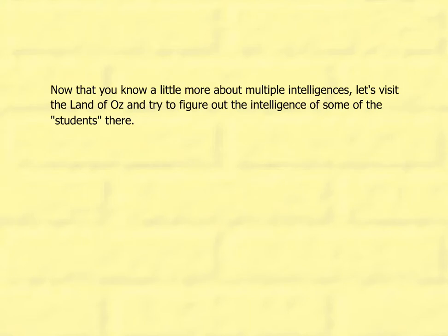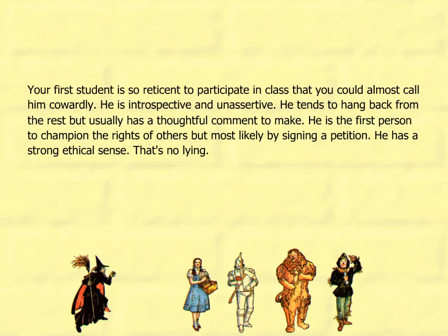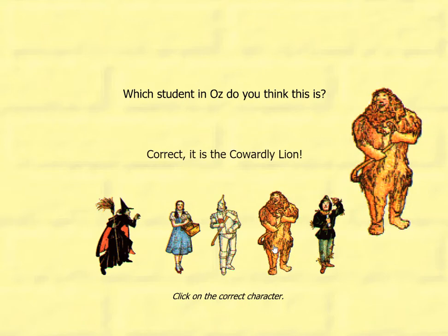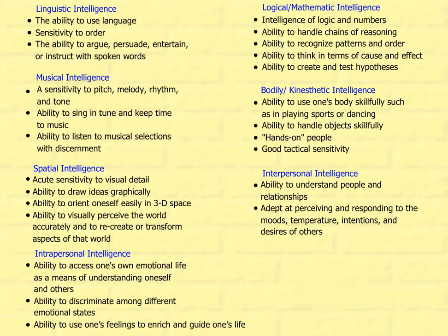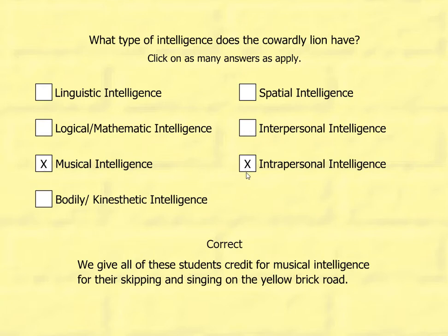Now that you know a little more about multiple intelligences, let's visit the land of Oz to figure out the intelligence of some of the students there. Your first student is so reticent to participate in class that you could almost call him cowardly. He is introspective and unassertive, tends to hang back from the rest but usually has a thoughtful comment to make. He is the first person to champion the rights of others, has a strong ethical sense — and that's no lion. It's the cowardly lion! He has musical intelligence and intrapersonal intelligence. We give all of these students credit for musical intelligence for their skipping and singing on the yellow brick road.